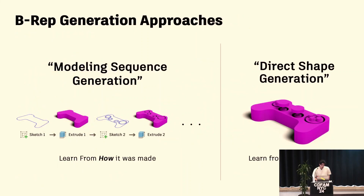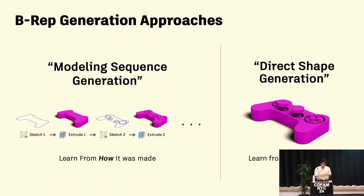For B-rep generation you can break all the work into two categories: learning how something was made — the steps somebody took, the buttons they pressed — or learning what was made, the shape they actually ended up with. I call these modeling sequence generation versus direct shape generation, and I'm going to talk about both of these today.